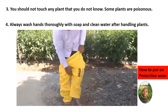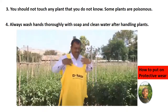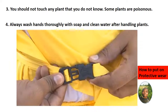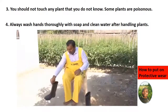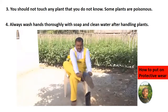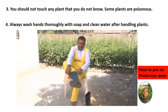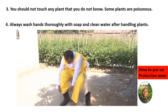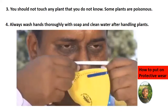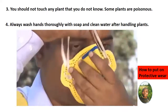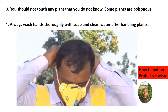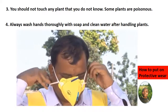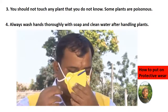In the video which is playing, we can see how to put on the protective wear. We start with the overall or dust coat, then we put on the gum boots or safety boots, followed by the dust mask, then goggles, then a cap if available, and lastly the safety gloves. After that we proceed to the activities on handling plants.